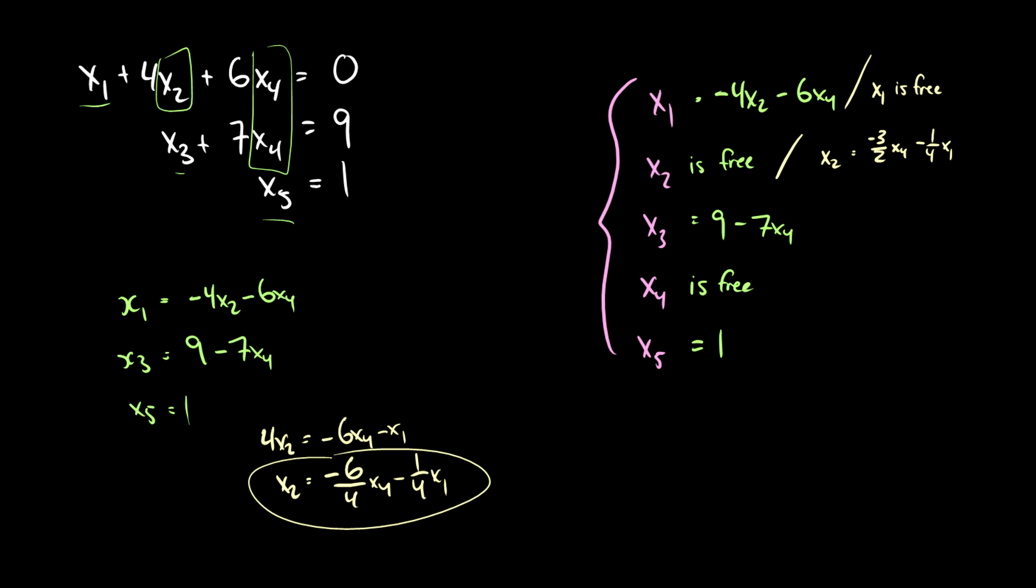The reason that I chose x1 to be the basic variable in this case is because we're not dealing with fractions. The numbers are a little bit nicer. So when we plug in values of x2 and x4, because they're free values, it's a little bit easier to determine what x1 is.